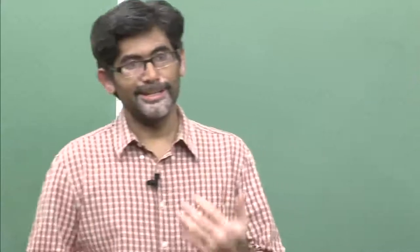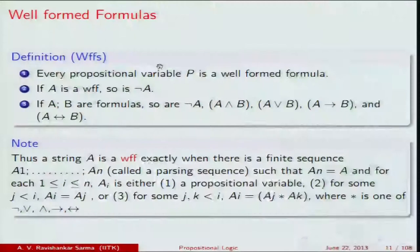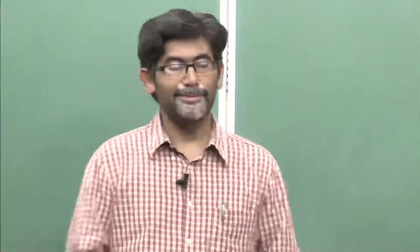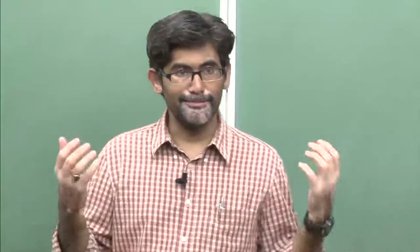Just like ordinary English language has grammar — which decides which sentences are grammatically correct or incorrect — in propositional logic we have what are called well-formed formulas. The language of propositional logic has some kind of alphabets, considered to be propositional variables, which represent propositions. For example, 'it is raining' can simply be represented as the letter R.